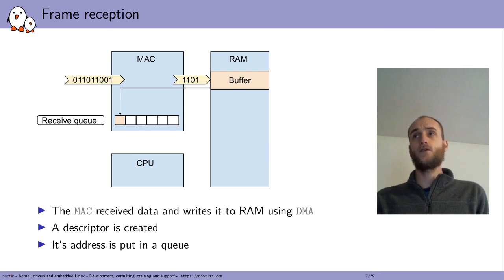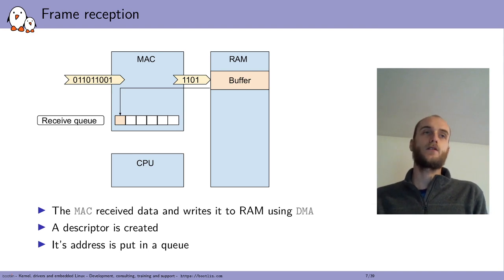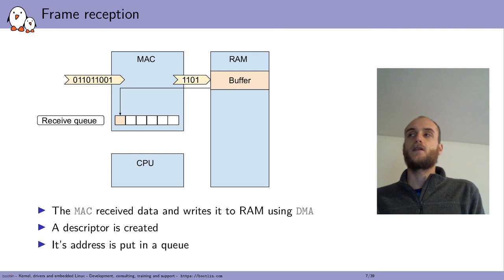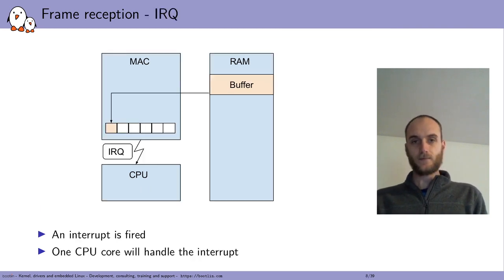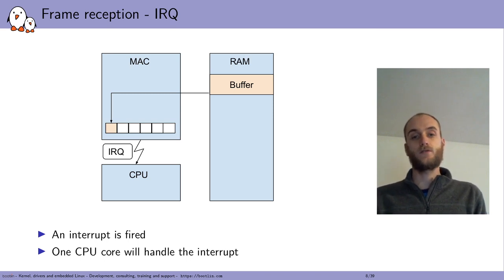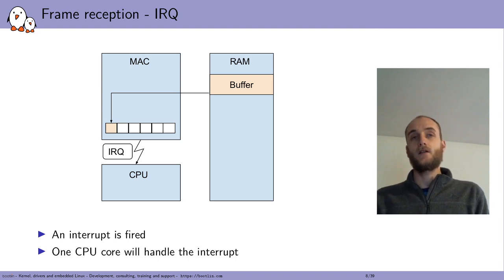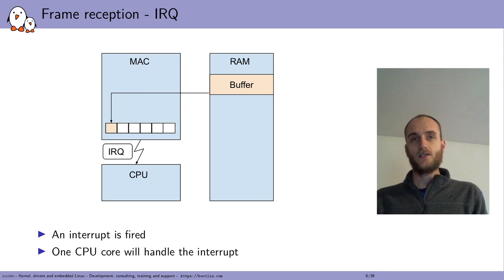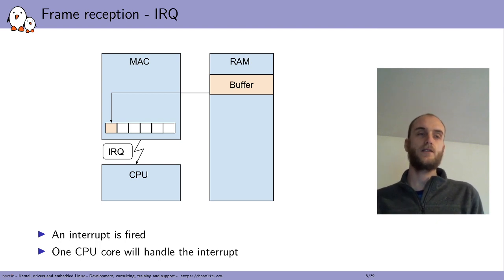The main purpose of the queue is that you can receive data while processing it on the CPU. If you are receiving a lot of data at any given time, the queue allows you to process it with some latency. Once the MAC is done receiving data and has written everything into a buffer, it raises an interrupt to the CPU. Only one CPU core will handle the interrupt, and importantly, that same core will do most of the packet processing on the kernel side.